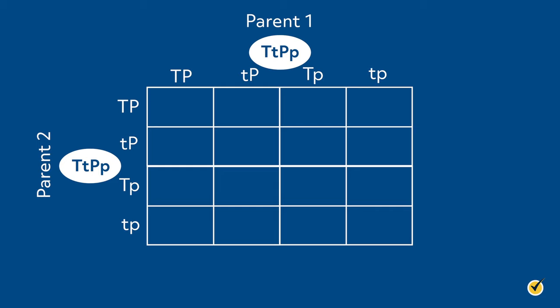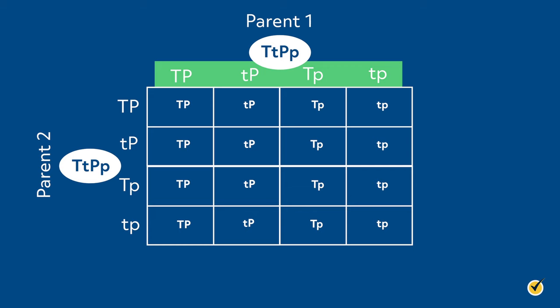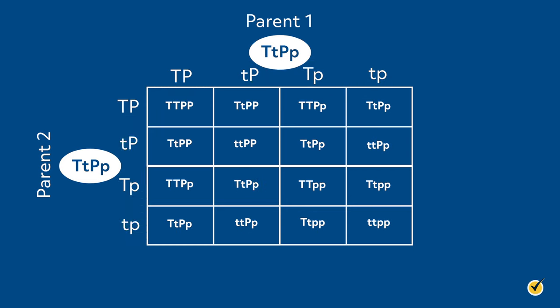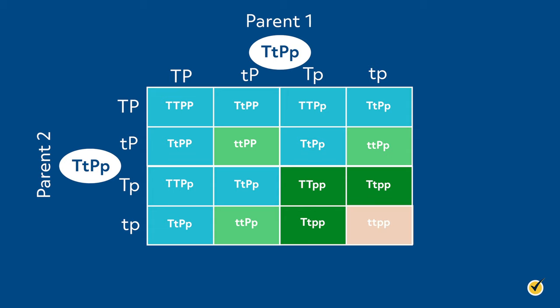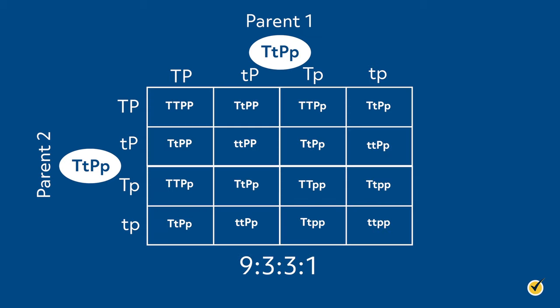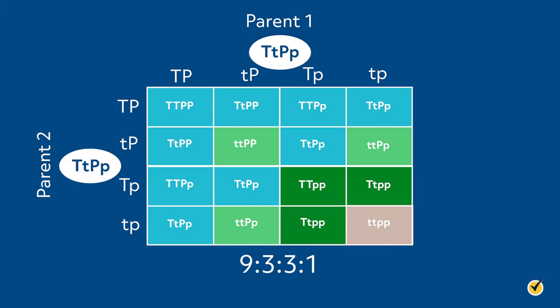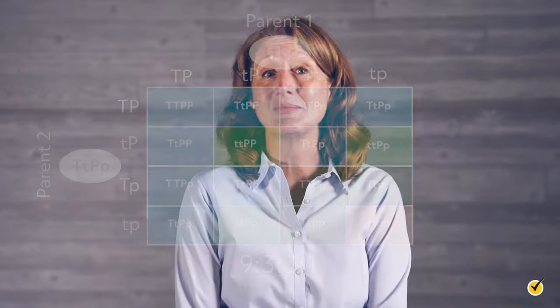Now let's fill in all the squares. When bringing the alleles down and across, it's helpful to keep the traits together. We can now see a clear pattern: nine offspring that will be tall and have a widow's peak, three that are short with a widow's peak, three that are tall without a widow's peak, and one that is short with no widow's peak. This is the classic 9:3:3:1 phenotypic ratio expected from a dihybrid cross. You can use the same method to do a test cross with different genotypes for the parents if you want to see different resulting phenotypes and ratios.